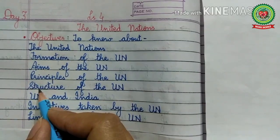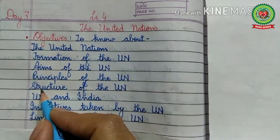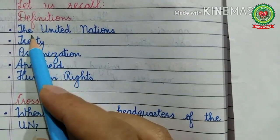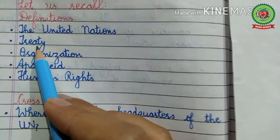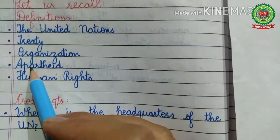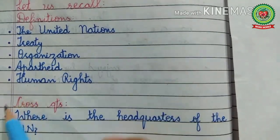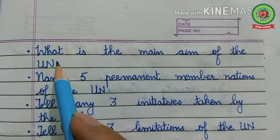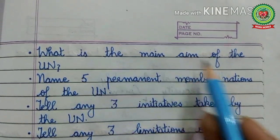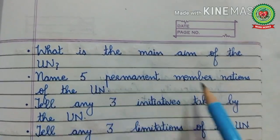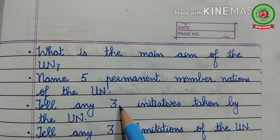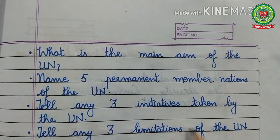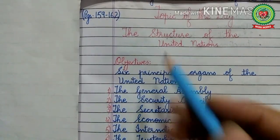Before starting today's topic, let us recall definitions and cross question answers related to the previous topic. The definitions are: the United Nations, treaty organization, apartheid, and human rights. Now answer these cross questions: Where is the headquarters of the UN? What is the main aim of the UN? Name five permanent member nations of the UN. Tell any three initiatives taken by the UN, and tell any three limitations of the UN.